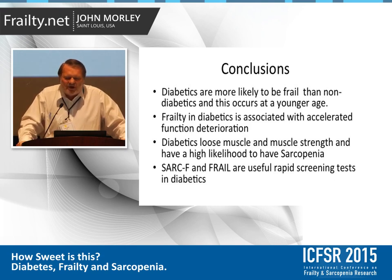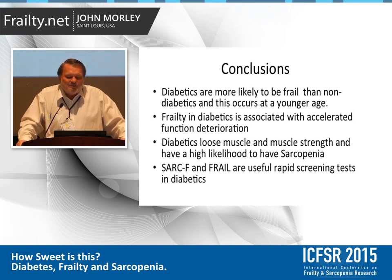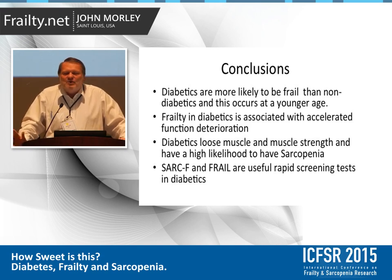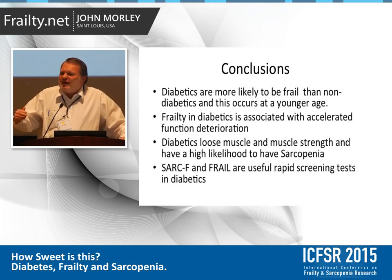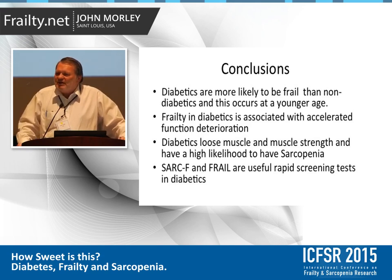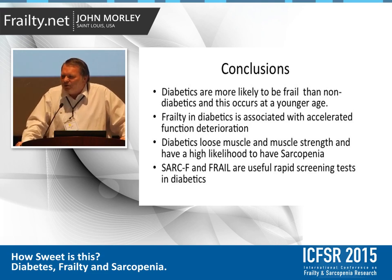In conclusion: diabetics are more likely to be frail than non-diabetics, and this occurs at a younger age. Frailty in diabetics is associated with accelerated functional deterioration. Diabetics lose muscle and muscle strength and have a high likelihood of sarcopenia. For quick clinical screening, you can use the SARC-F and FRAIL scale, which are useful rapid screening tools in diabetics. Alan Sinclair will now come up and tell you more about disability in diabetics.